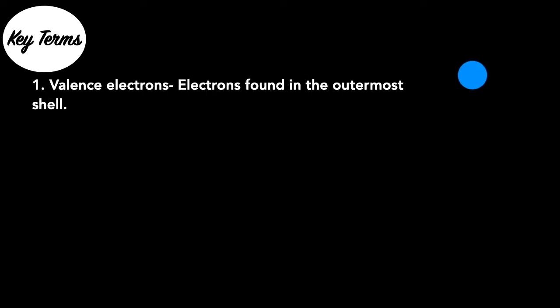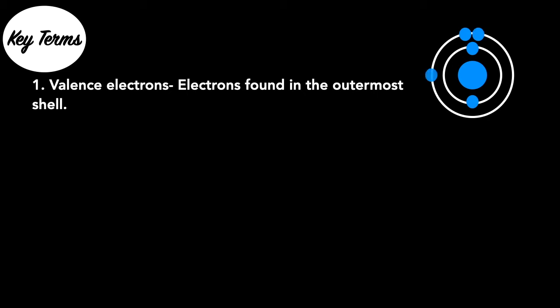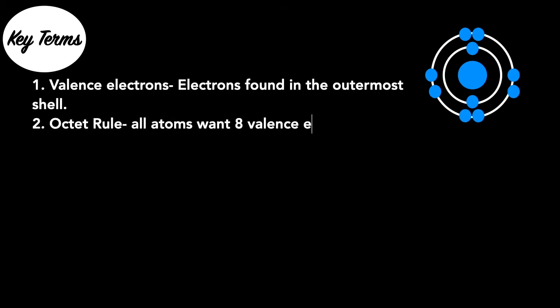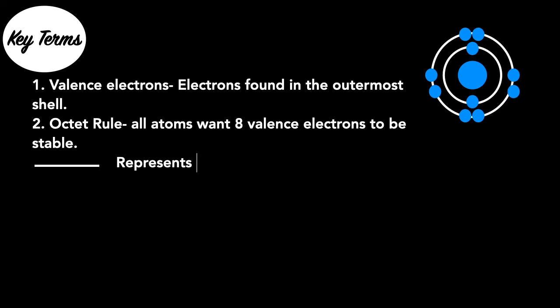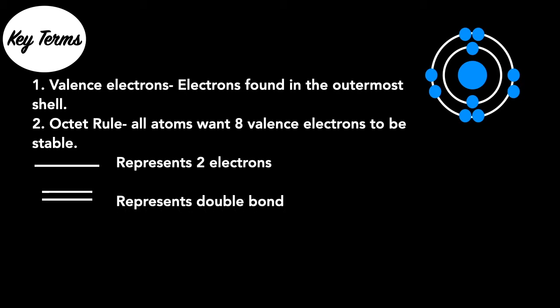Key terms — these are key terms we need to know in order to draw Lewis dot structures. Number one: valence electrons — electrons found in the outermost shell of an atom, as seen in the picture on the right. We need to find the total number of valence electrons an element or compound has before drawing. Number two: the octet rule. Lewis dot structures follow the octet rule, which means all atoms want eight valence electrons in order to be stable. A single line is drawn to represent two electrons. Double lines represent double bonds and triple lines represent triple bonds. Side note: the more bonds you have, the stronger the pull between the two atoms and the shorter the bond length.